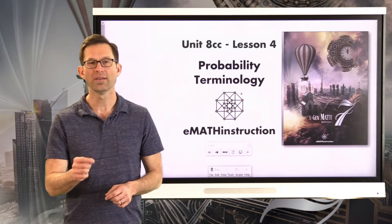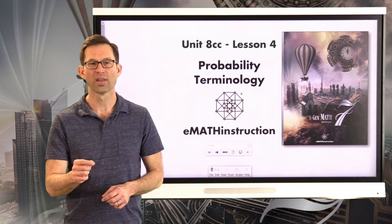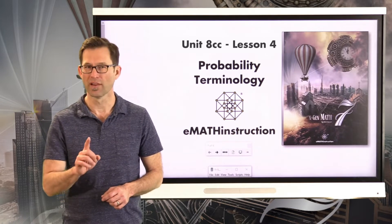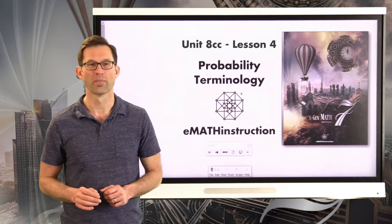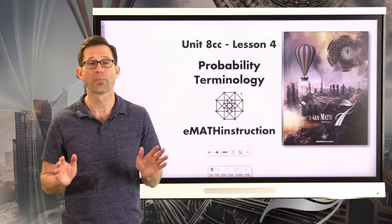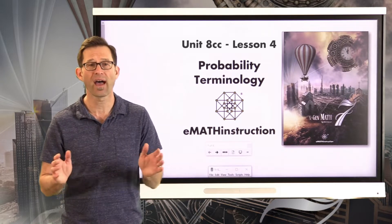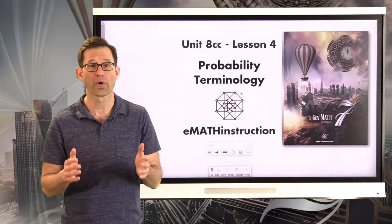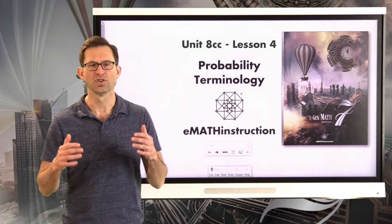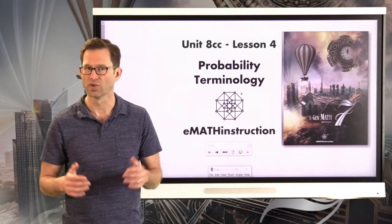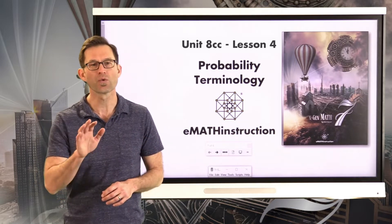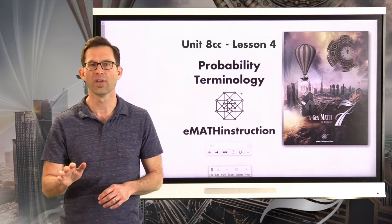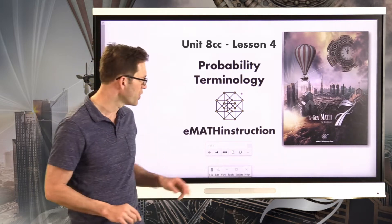Hello and welcome to another NGen Math 7 lesson by eMath Instruction. My name is Kirk Weiler and today we're going to be doing Unit 8 CC Lesson 4 on Probability Terminology. This whole unit is on probability, which is a fantastic and really cool branch of mathematics — one of the major branches along with algebra, geometry, and trigonometry. Let's jump into it right away.